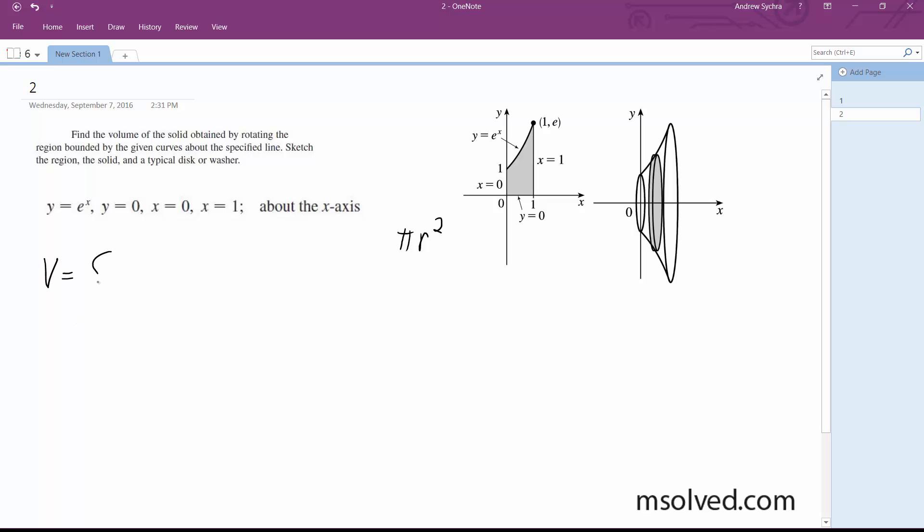The volume is the integral from 0 to 1. Our equation is e to the x, and we're going to square this because that's our radius, then multiply by pi.